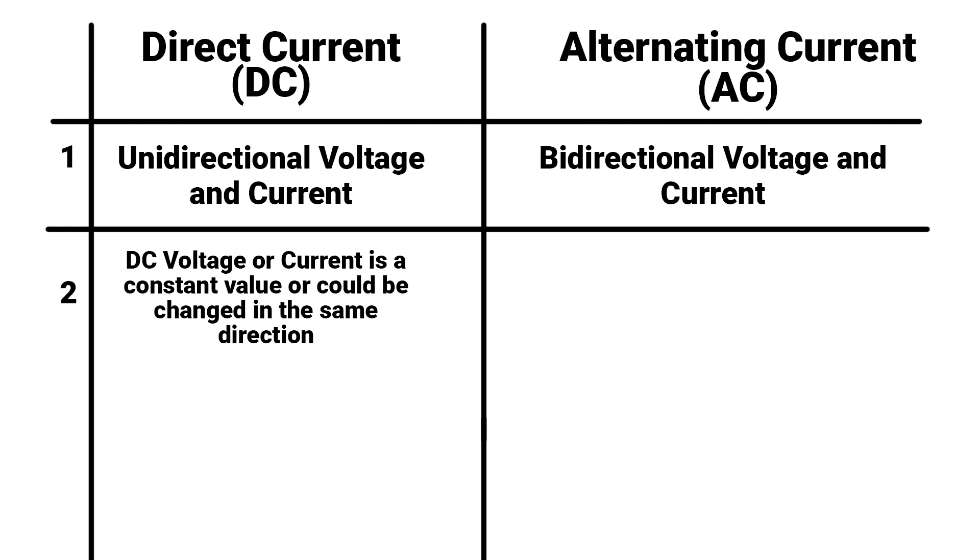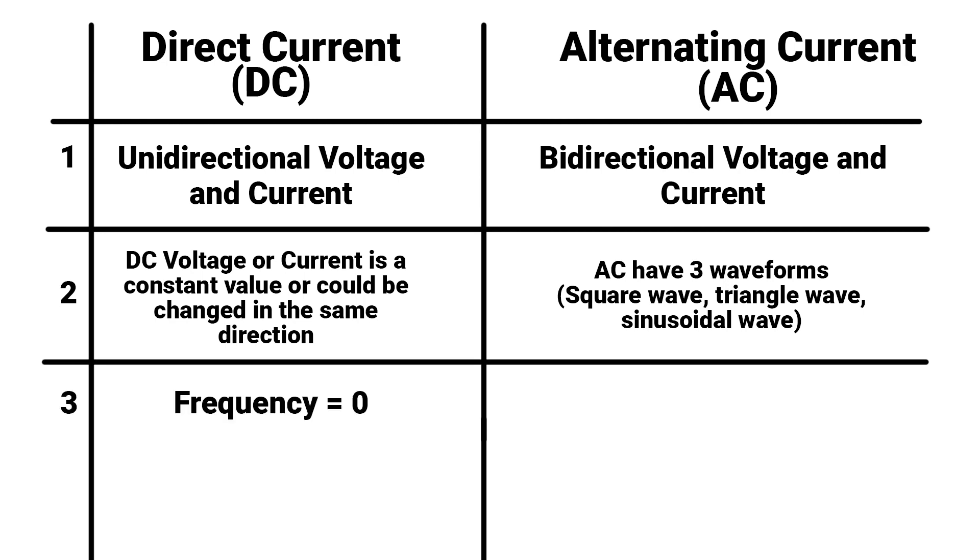DC current or voltage could be constant or could change with time in the same direction. AC has three waveforms: square wave, triangle wave, and sinusoidal wave like our homes. The frequency of direct current is zero because here we don't have repeated cycles.